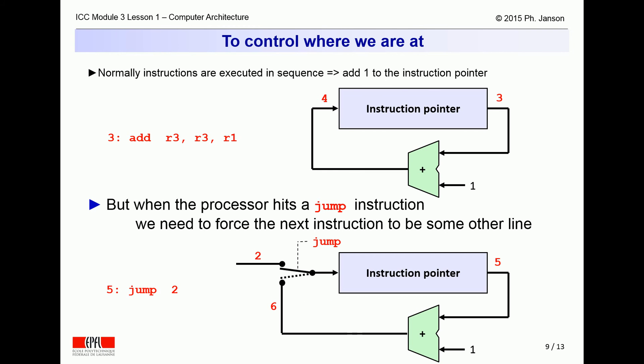Yet as we saw in the previous video clip, some assembler language instructions, such as jump to, indicate to the computer that it should jump to some other instruction than the next one. Thus there needs to be a switch between the output of the unit adder and the input of the instruction pointer, which can be flipped so that the pointer can be forced to some random non-next instruction.